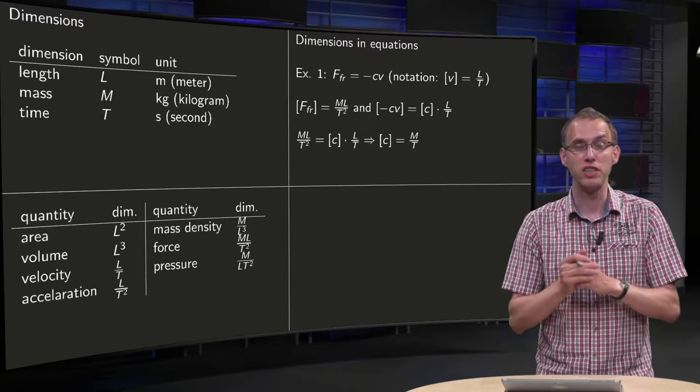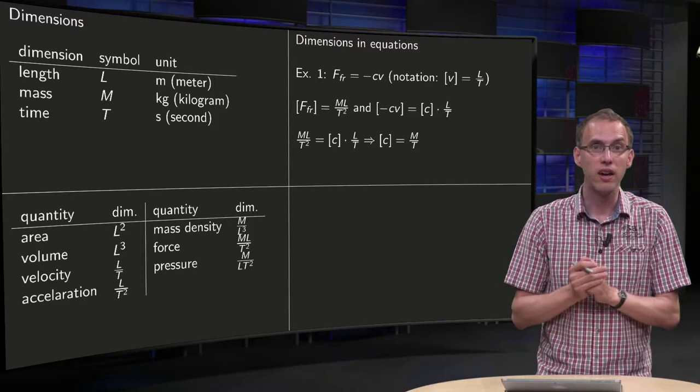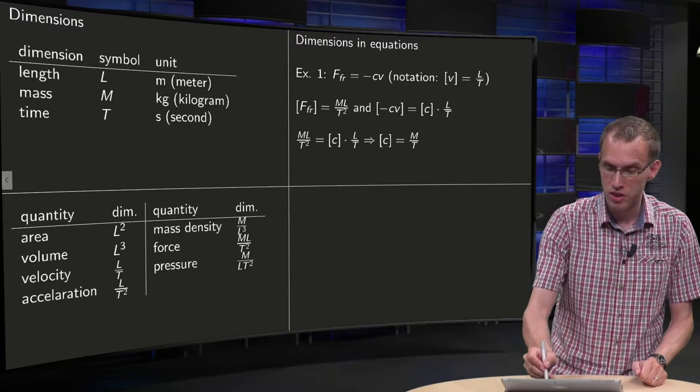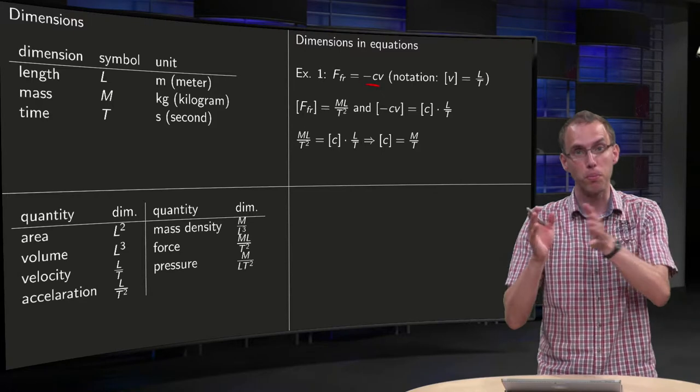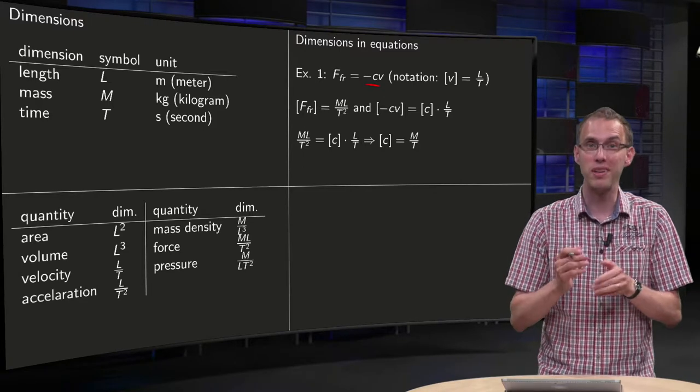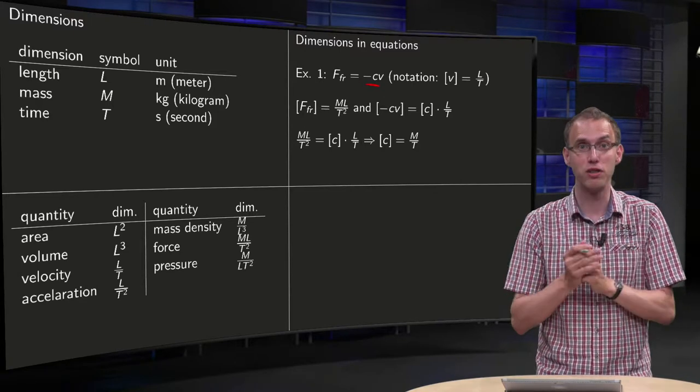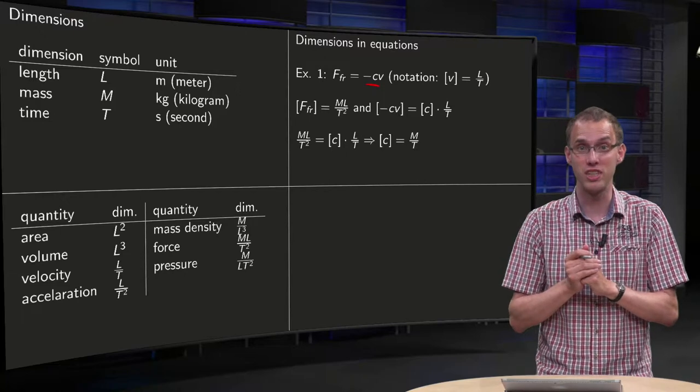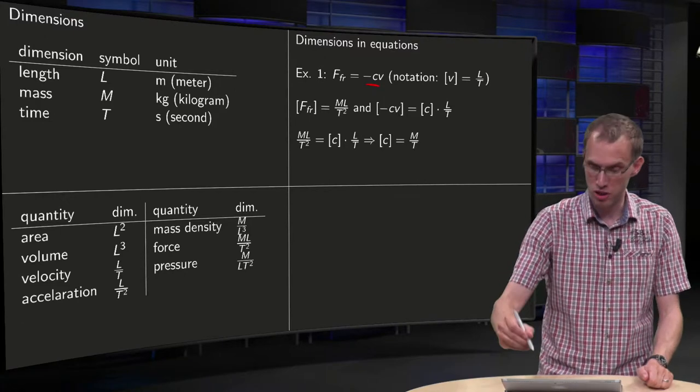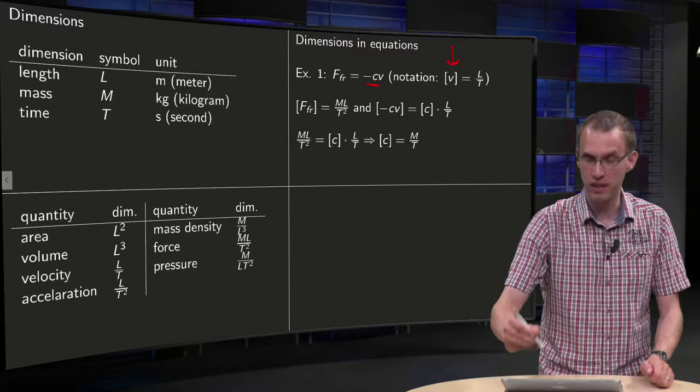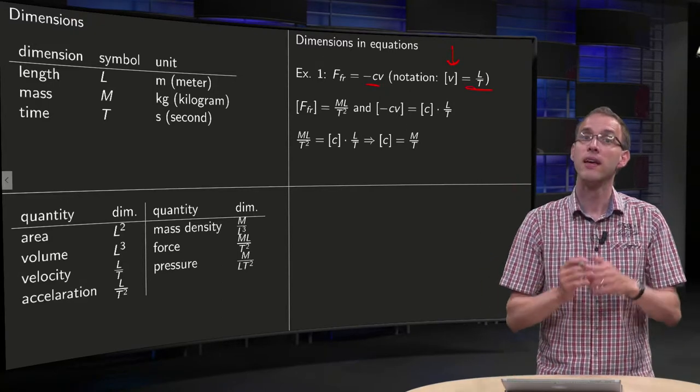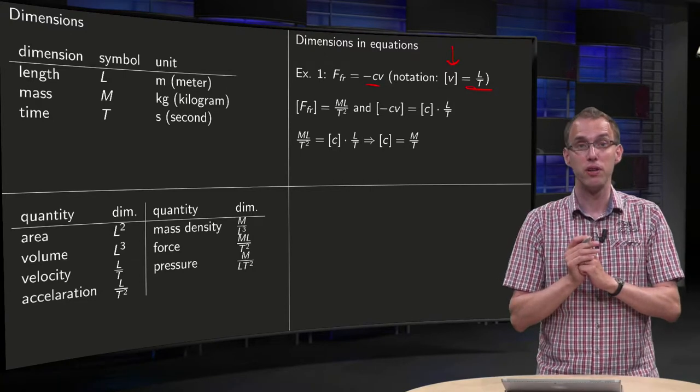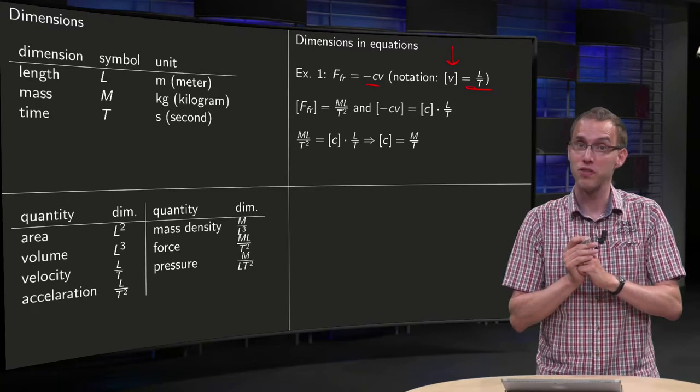What about equations, how can you find the dimensions of this C over here? If you have frictional force proportional to velocity, what would be the dimension of this proportionality constant C? We always use this notation here, the dimension of V between those brackets like this equals L over T.